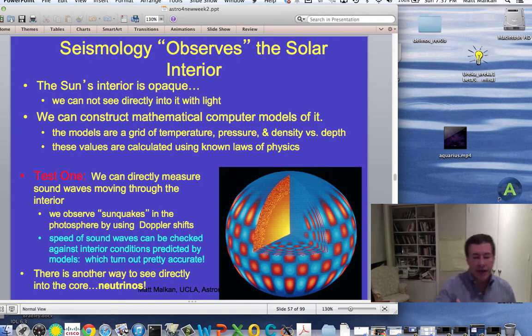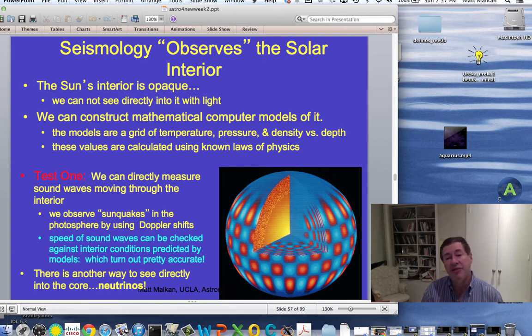I need to now look at the evidence that we actually understand the conditions in the center of the sun well enough to have confidence that our computations of nuclear reactions are reasonably accurate. The problem is, of course, we cannot see into the sun. It's completely opaque. So we only have mathematical models of the sun.